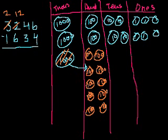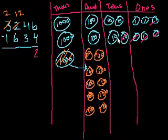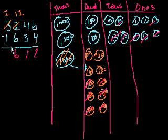Now every number on the bottom is less than the number on the top, and we can subtract. 6 minus 4 — so 6 minus 1, 2, 3, 4 is 2. 4 minus 3 — so 4 minus 1, 2, 3 is 1. 12 minus 6 — 1, 2, 3, 4, 5, 6, we have 6 left. You know that 12 minus 6 is 6. And then 2 minus 1 — this one's not there anymore, so we have 2. Take out 1, you just have 1 left. 1,612.